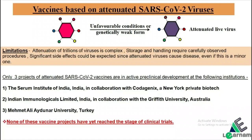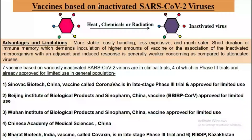Another type is the inactivated SARS-CoV-2 virus vaccine, where the virus is inactivated using heat, chemical, or radiation treatment. Its advantages include stability, easy handling, lower cost, and greater safety. Its limitations include short duration of immune memory, which demands inoculation of a higher amount of vaccine or association with an adjuvant — whose main function is to generate a stronger immune response. The induced immune response is generally weaker compared to attenuated virus vaccines.